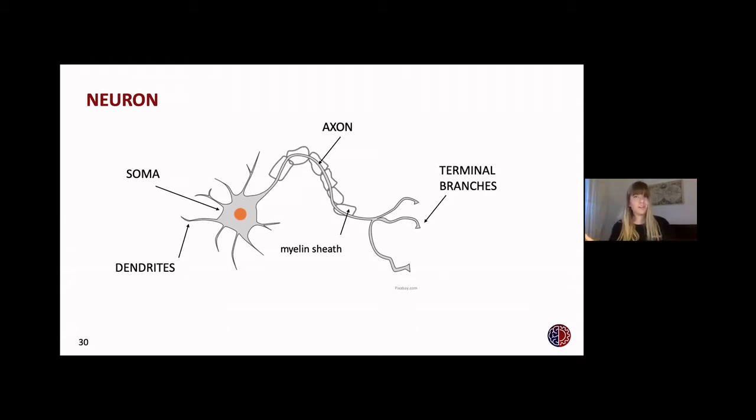The myelin sheath is organized into nodes. These nodes are called Ranvier nodes. And the signal basically jumps from one node to the other, and this makes the signal transmission faster.